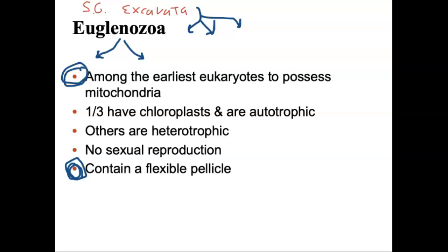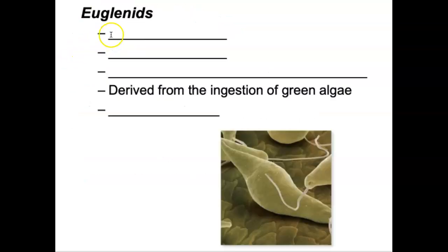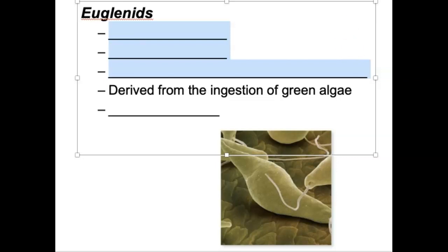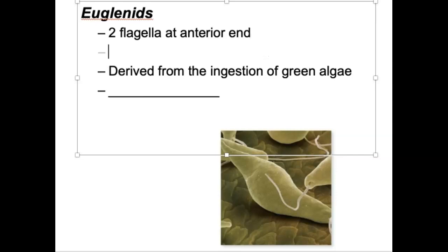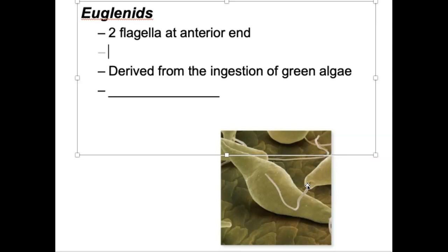Let's dive into Euglenoids first, then we'll get into Kinetoplastids. Euglenoids — Excavata, Euglenozoa, Euglenoids. How do we know you're a Euglenoid? You're going to have two flagella at your anterior end. The picture here is a light micrograph of Euglenoids. They're tough to see because they're so small — you can see one flagella for sure, and the other one is a very small, reduced flagella, very difficult to see. But there is a second one there — two flagella at the anterior end.